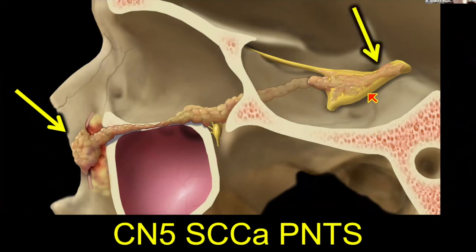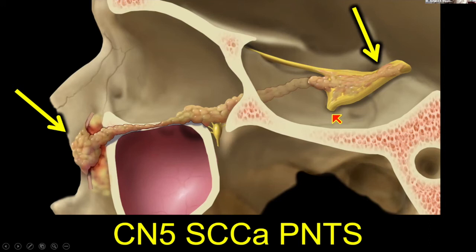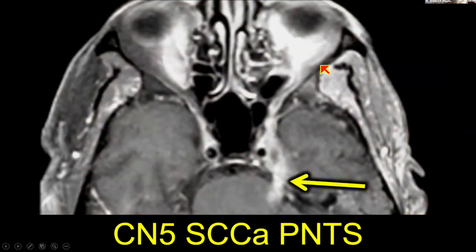That deep spread is hard to palpate, so it's my job to tell the surgeons if it's there. Perineural tumor spread is kind of the head and neck imager's specialty — we really don't talk about it much outside the head and neck, except maybe with prostate imaging. If a patient has tumor going along rotundum, in the cavernous sinus, in the trigeminal cistern, and touching the pons, he's probably not a very good surgical candidate. It's my job to tell them how deep the iceberg goes towards the brain.